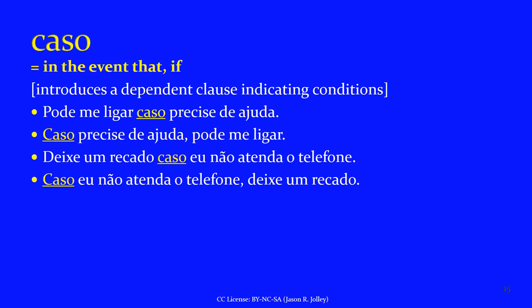Moving on to CASO, another subordinating conjunction not quite as common as SE or QUE. CASO means 'in the event that' or 'if,' and it usually introduces a clause in the subjunctive mood. It introduces a dependent clause indicating conditions. 'Você pode me ligar caso precise de ajuda' — you can call me in the event that you need help. Or inverted: 'Caso precise de ajuda, pode me ligar.' 'Deixe um recado caso eu não atenda o telefone' — leave a message in the event that I don't pick up the phone. 'Caso eu não atenda o telefone, deixe um recado.'